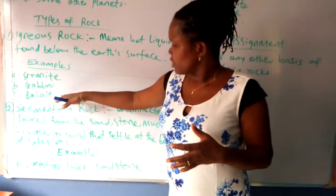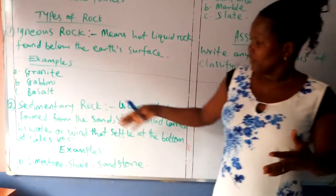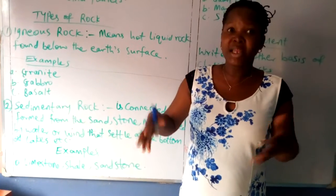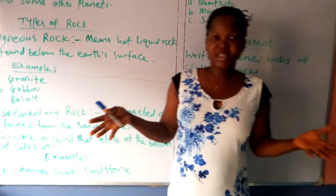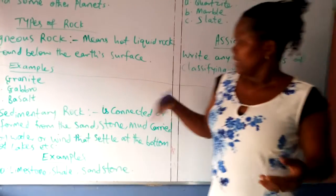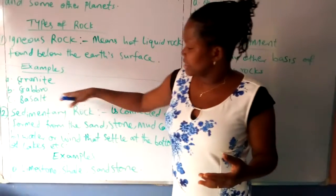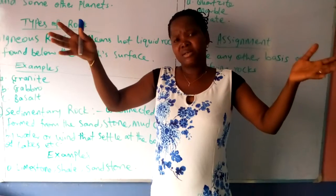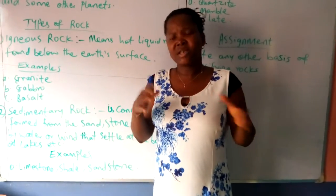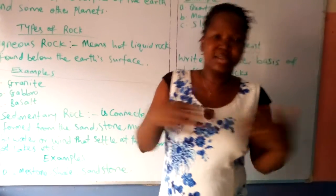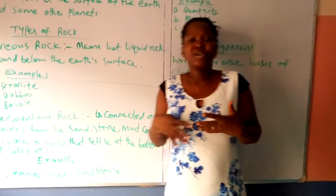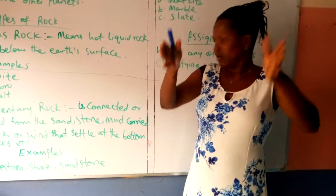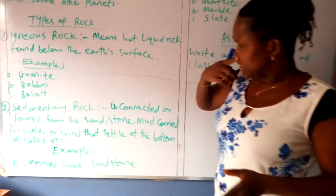Basalt comes from volcanoes. A volcano is a kind of very large mountain that has openings through which gases come out into the air.